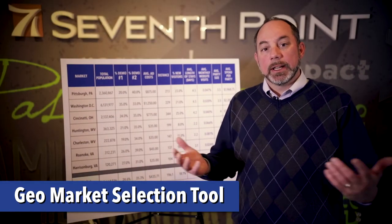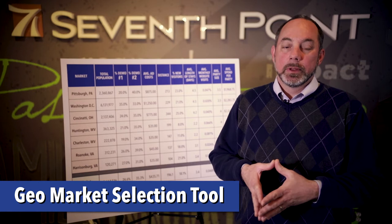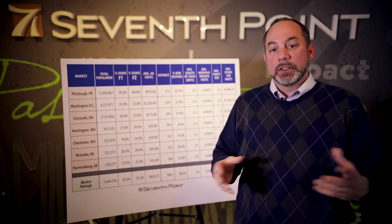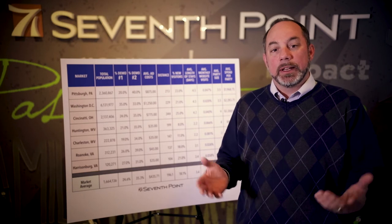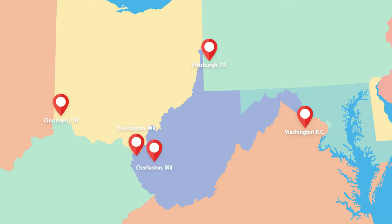The GeoMarket Selection Tool starts with understanding where your customers are coming from. In this example, we use a destination in West Virginia that draws from various cities around the area. We start with markets like Pittsburgh, Washington D.C., Cincinnati, Huntington and Charleston, West Virginia, and markets as far away as Roanoke and Harrisonburg, Virginia.